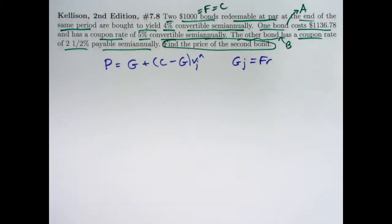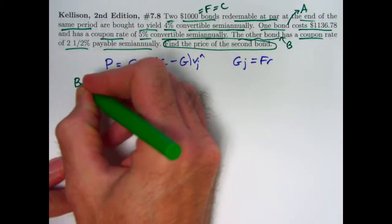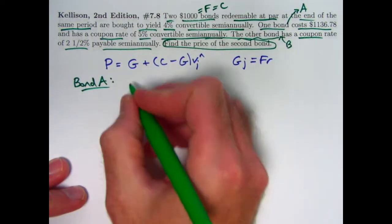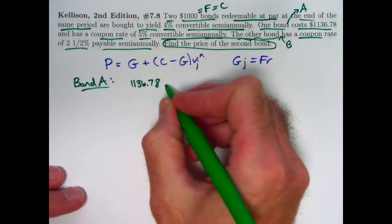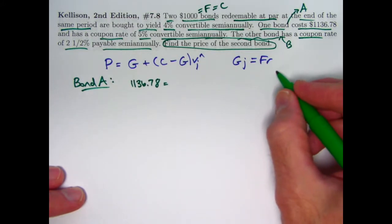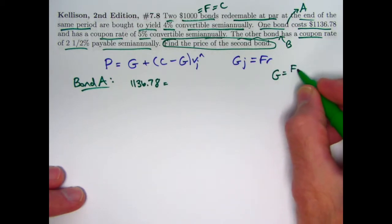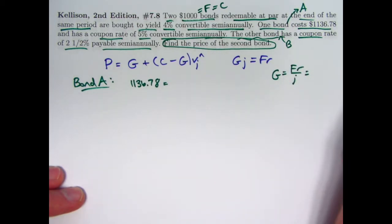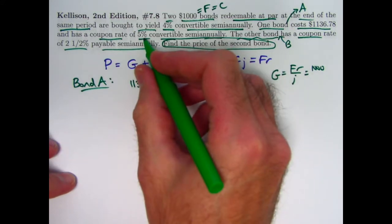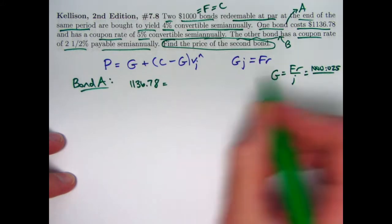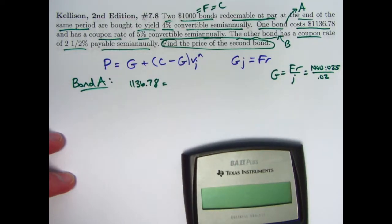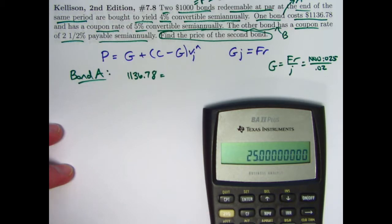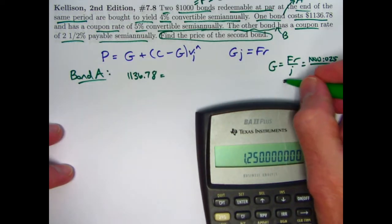So let's now think about this first with bond A, whose price we know. We'll omit the dollar signs here. 1,136.78 is the price of bond A. What is its base amount capital G? We need to figure that out. You can solve this equation for capital G to be F times R over J. So for bond A, F is again 1000, R is the semi-annual coupon rate, that's going to be half of 5%, 0.025. And J is the semi-annual yield rate, half of 4% is 0.02. So the coupon amounts are 25. Divide that by 0.02. The base amount for bond A is $1,250.